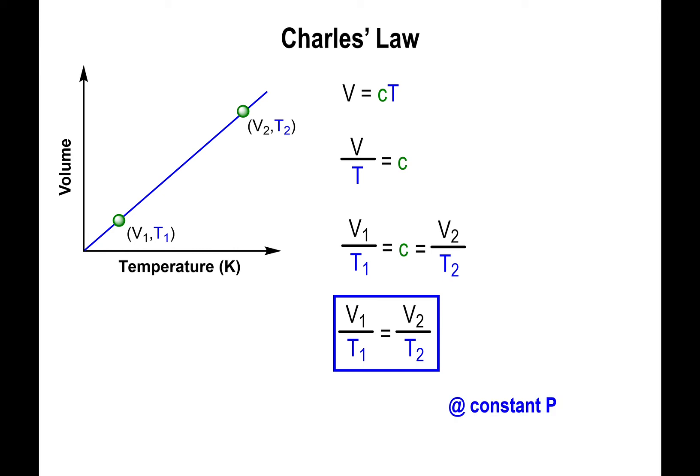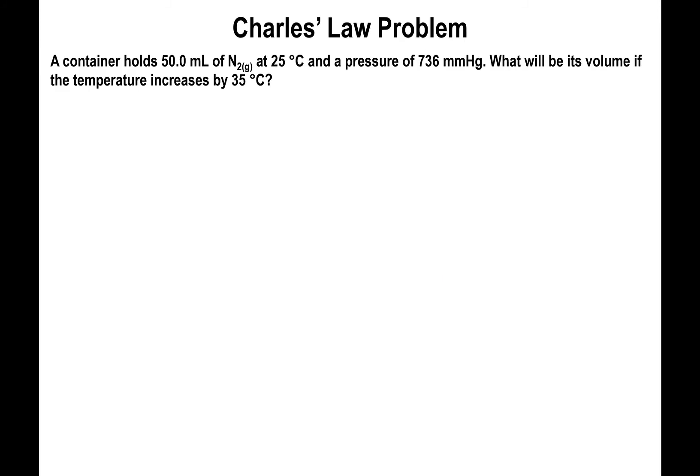Here's an example. We have 50 milliliters of nitrogen gas at a temperature of 25 degrees Celsius and a pressure of 736 millimeters mercury. What is the volume if the temperature increases by 35 degrees? Volume and temperature are mentioned twice, but nothing is mentioned about the pressure changing, so you can assume the pressure remains constant.